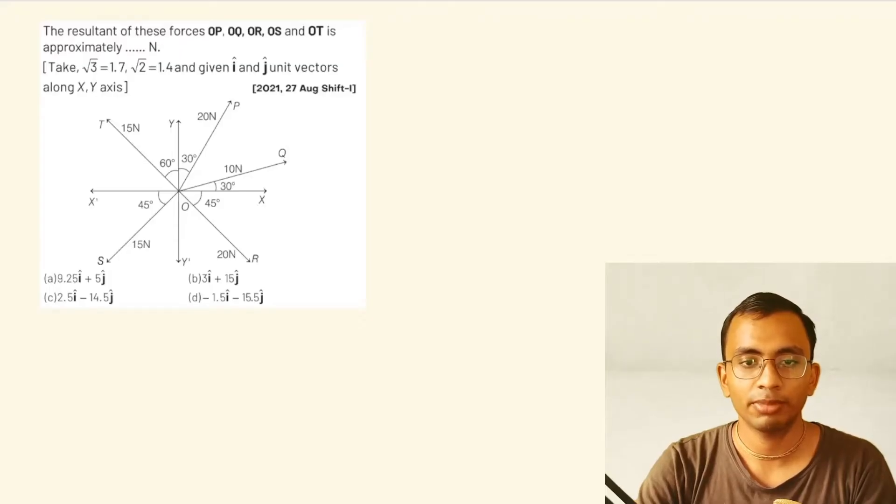There is a previous year question from JEE Mains 2021 where we have to find the resultant of five vectors. Let us solve that. First of all, we will write all five vectors in component form.